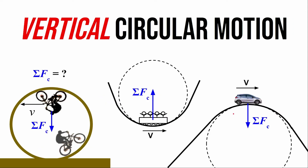Coming back to our examples of vertical circular motion, we know that no matter what's going on with the forces, the sum of the forces has to point towards the center of the circular path. For the mountain biker at the top of the vertical loop, the sum of the forces points down. For the roller coaster at the bottom of the hill, the sum of the forces points up. For the car cresting a hill, the net force points down toward the center of curvature.